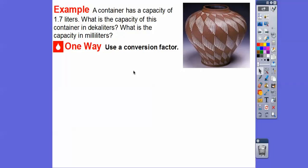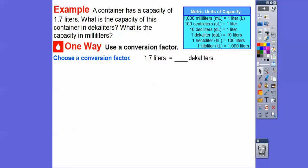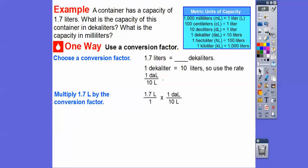Here's an example: a container has a capacity of 1.7 liters. What's the capacity in deciliters and what's the capacity in milliliters? The first question we're going to answer using the conversion factor from liters to deciliters. Let's choose the conversion factor: 1 decaliter equals 10 liters. We're going to multiply by 1 decaliter for 10 liters. Notice we want the liters to be on the bottom so it cancels out with the liters on top, and we'll be left with decaliters.